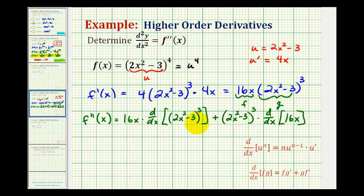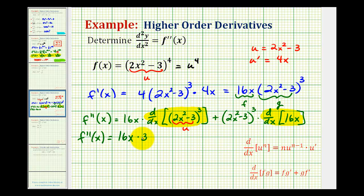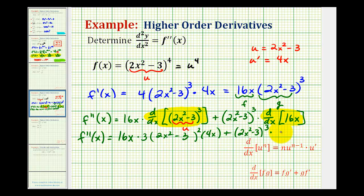Now let's focus on determining the derivative of each part. f double prime of x equals sixteen x times the derivative of the quantity two x squared minus three to the third. Applying the extended power rule again with u equal to two x squared minus three, we get three u squared times u prime, where u is two x squared minus three and u prime is four x. Plus the quantity two x squared minus three to the third, times the derivative of sixteen x, which is sixteen.